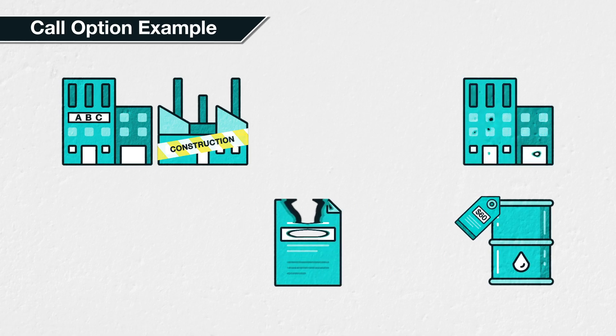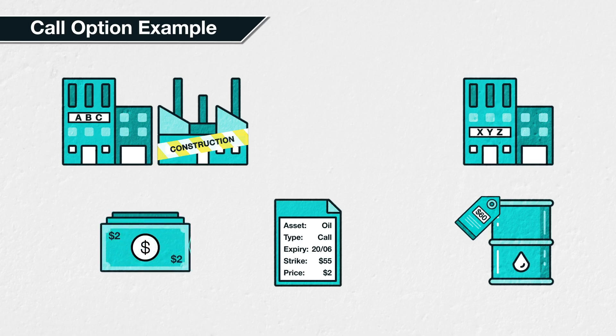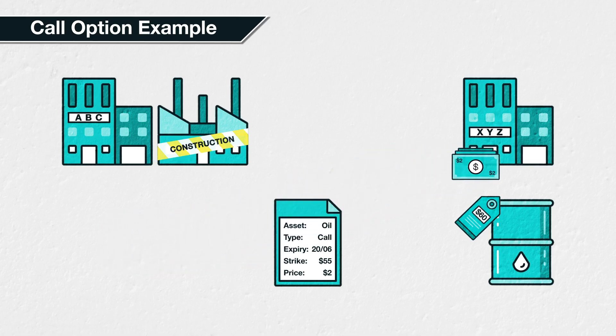This could take the form of a legal agreement with another company, let's call them XYZ, that agrees to sell ABC the oil at no more than $55 per barrel on the 20th of June next year. Even if the price of oil increases to more than $55 per barrel, XYZ will be obligated to sell ABC the oil at $55 per barrel. In exchange for this valuable agreement, ABC pays a fee, or premium, to XYZ — something like $2 per barrel, which XYZ keeps no matter what happens. This agreement between ABC and XYZ is essentially a call option.